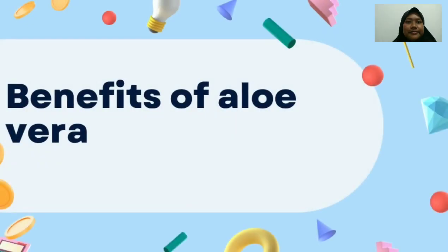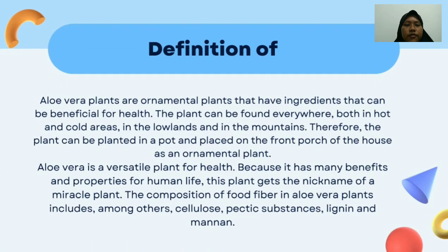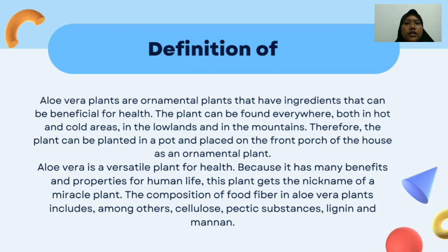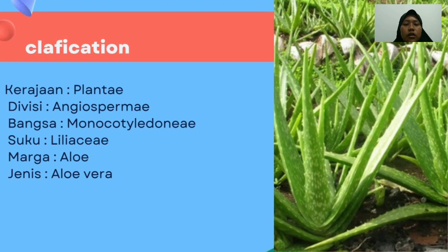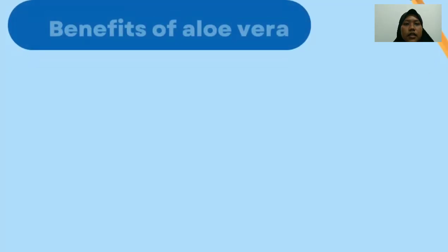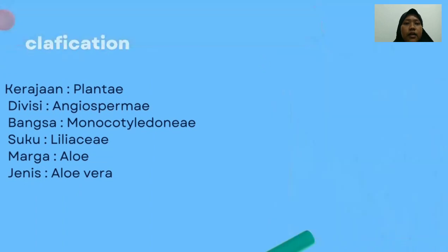Hello everyone, my name is Dalisha. I will present what Aloe Vera is. Aloe Vera plants are ornamental plants that have ingredients that can be beneficial for health. The plant can be found everywhere, in hot and cold areas, in lawns and in the mountains. Therefore, the plant can be planted in a pond or in front of the house as an ornamental plant. Aloe Vera is a virtual plant for health because it has many benefits and uses for human life. This plant gets the nickname of a miracle plant.